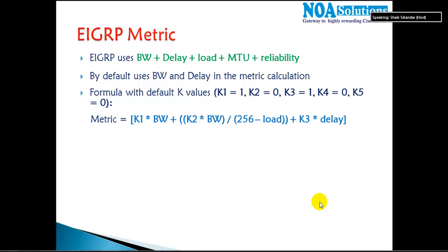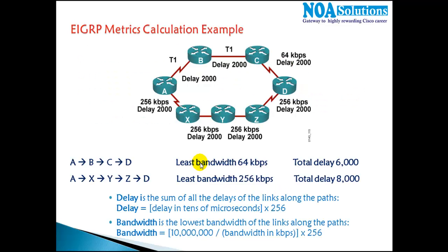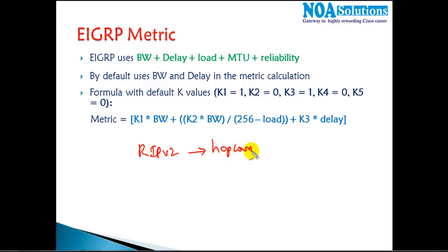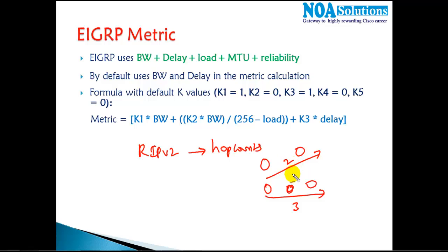In this section, our main focus will be on understanding the EIGRP metric calculation process and the different formulas it uses. Just like RIP version 2, which decides the best route based on hop count — whichever route has the least number of hops is considered the best route.